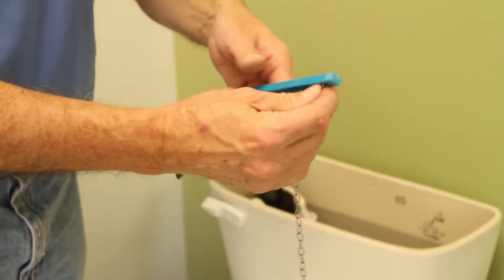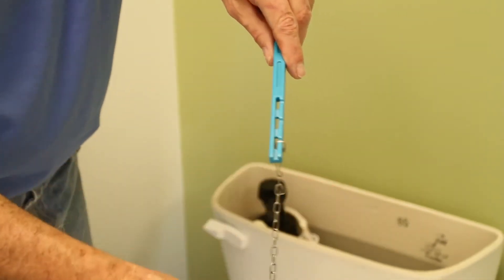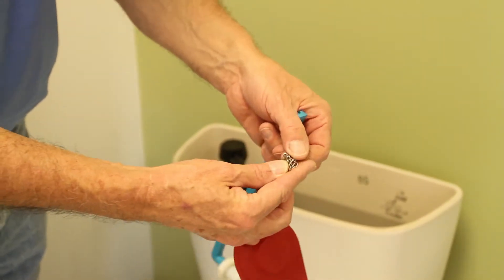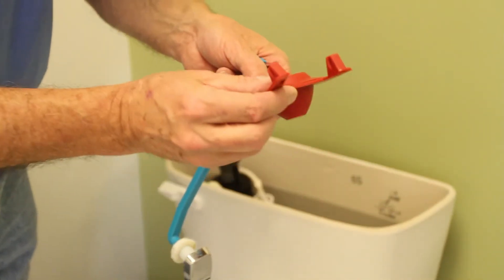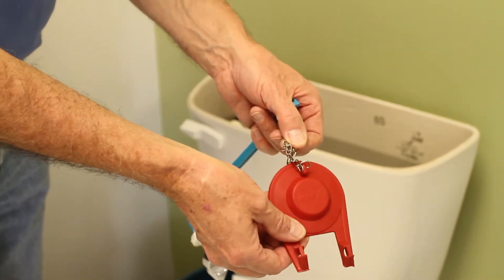The other thing that sometimes happens is that this hook can come out of that hole there, or occasionally, for reasons I've never understood, you can get a kink in the chain. The flapper will not fall down as far as it should, and so you'll continue to have water run.